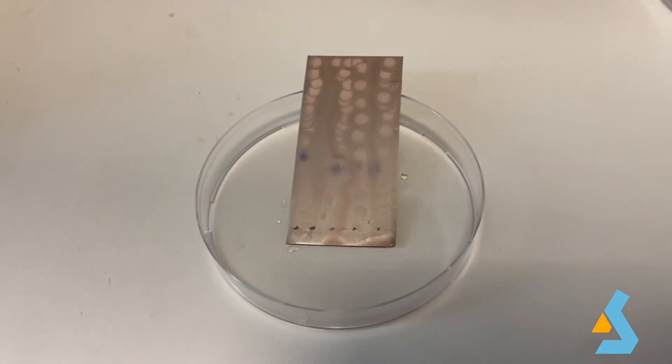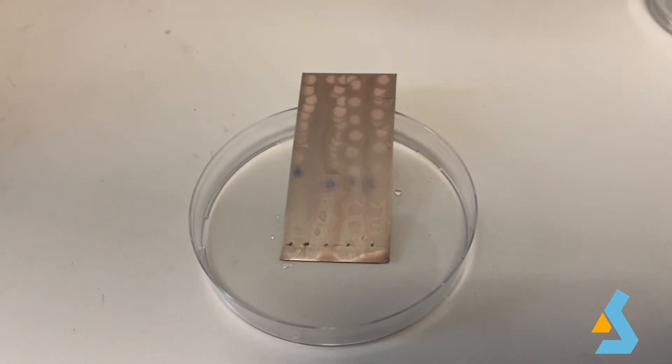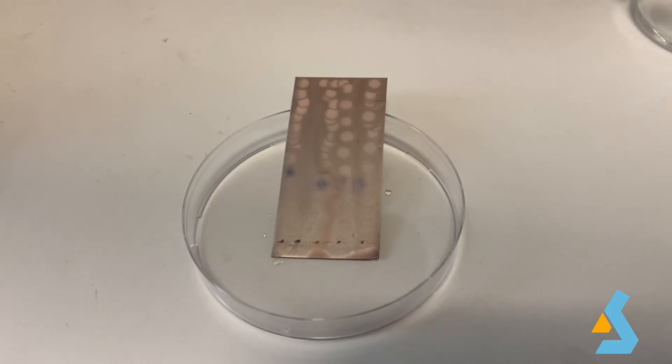After the application of the ninhydrin reagent, the TLC plate now has visible spots. Now, we will calculate the RF value for these spots and we will try to identify the unknown mixtures.